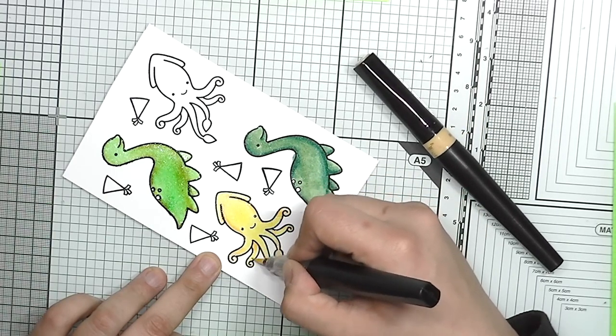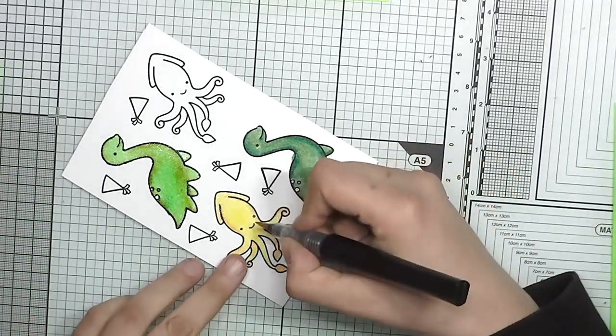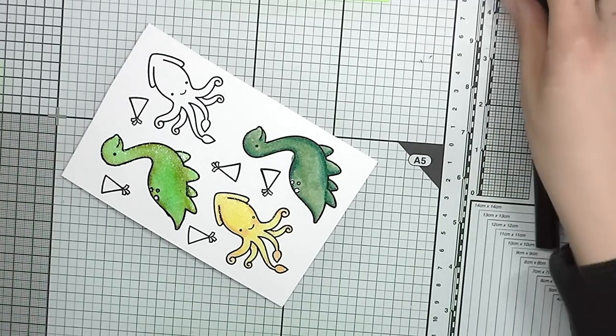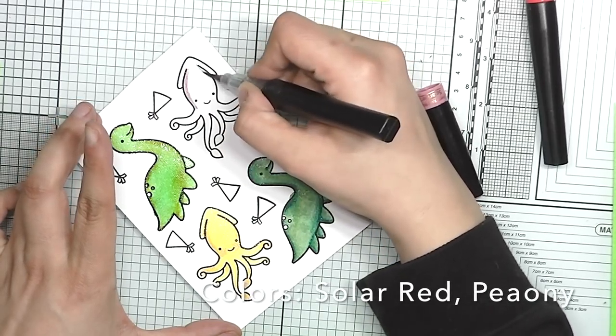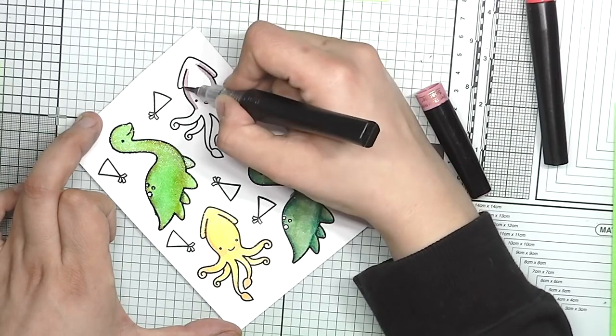So for this one I made the tentacles be a bit darker and the body a bit lighter, and I added some rosy cheeks for this one. And this last one was one that I didn't use for the card because I didn't think the colors looked good together with the other ones, so I just skipped this one.